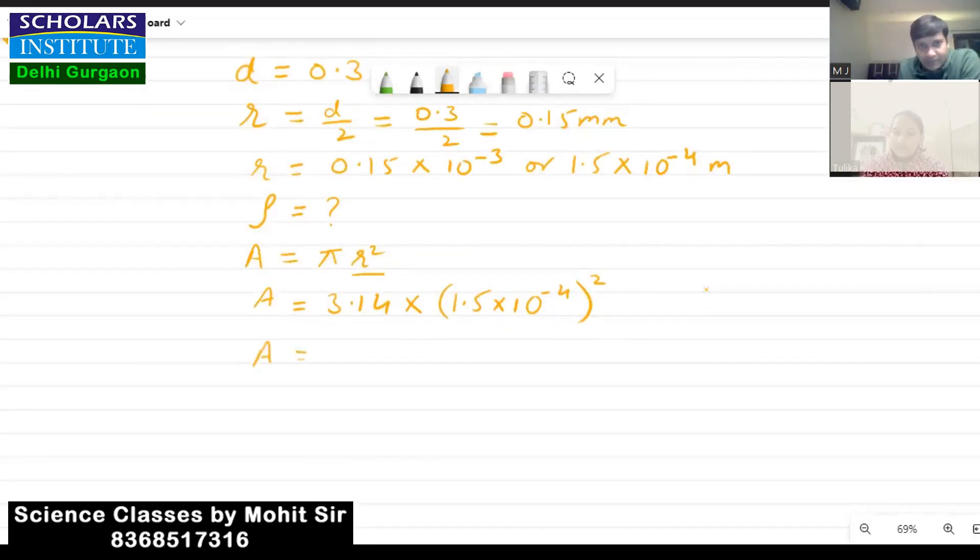So area of cross section will be 3.14 into 2.25, 1.5 square is 2.25, into 10 to the power minus 8 meter square. That will be the unit for this area. This is the area. We will use the formula resistance is equal to resistivity into length upon area. This is the formula.